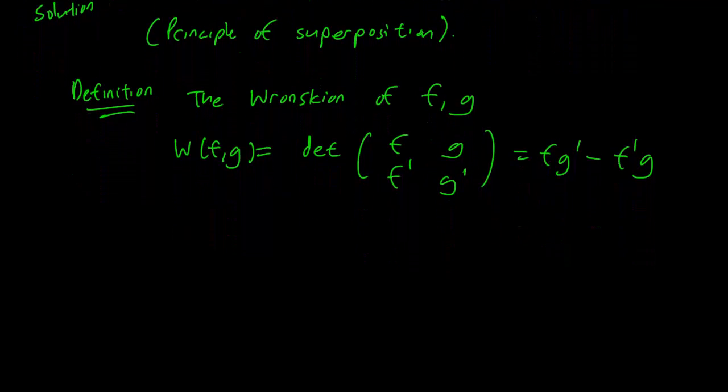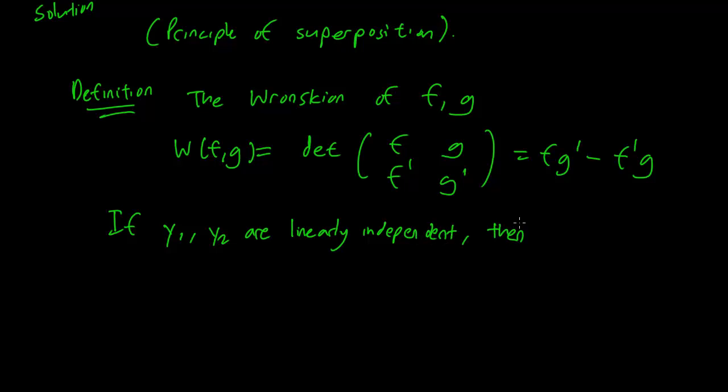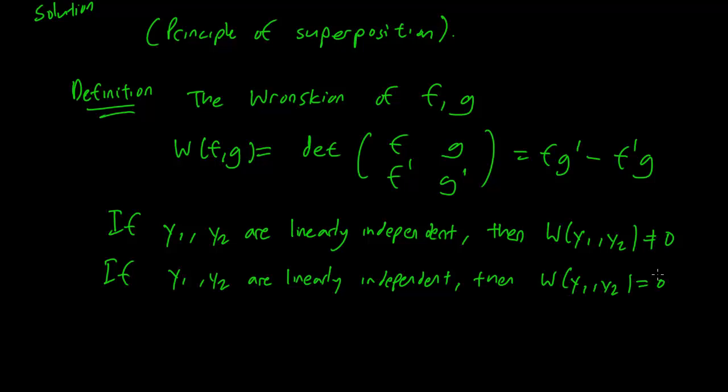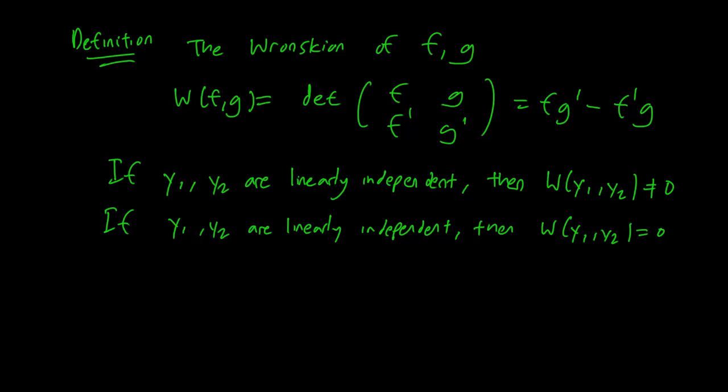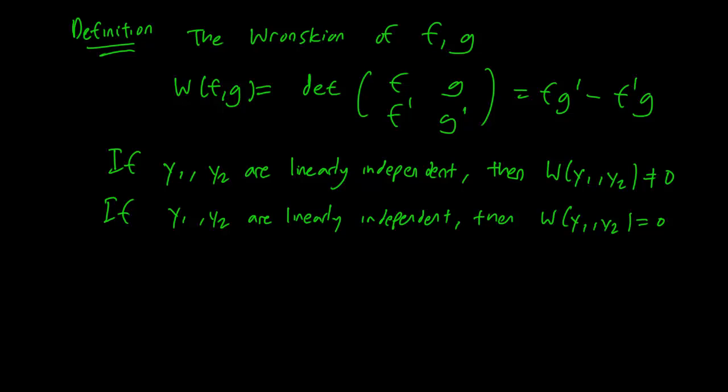And this is important because if y1 and y2 are linearly independent, then the Wronskian is going to be non-zero. If y1 and y2 are linearly independent, then this is going to be zero. So it's important when you are writing down a general solution of second order ODE to make sure that the Wronskian of the two linearly independent solutions you picked are non-zero.